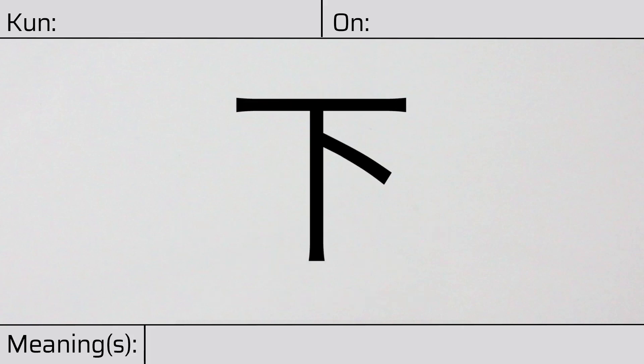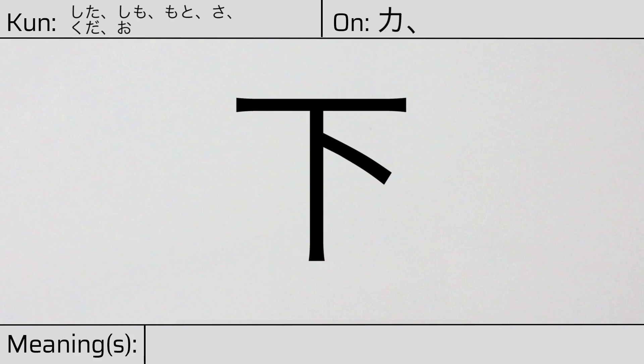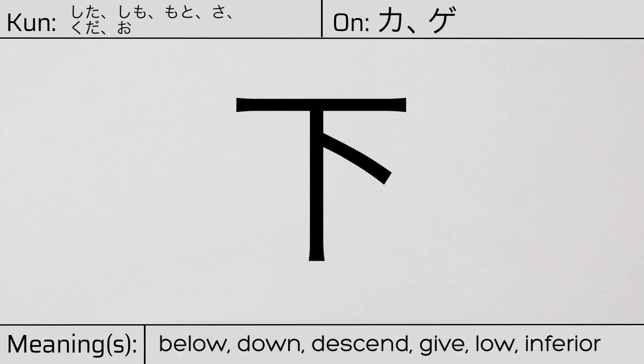Welcome to this lesson on Japanese Kanji. Today, we'll be discussing this character. This Kanji has kunyomi or Japanese readings of shita, shimo, moto, sa, kuda, or o. And it has onyomi or Chinese readings of ka or ge. This character has the meanings below, down, descend, give, low, or inferior.